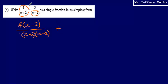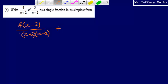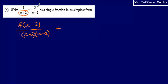Then we're going to do exactly the same with our other fraction. So we're going to take x+2 and multiply it by 3/(x-2). That gives us 3(x+2) over (x+2)(x-2).